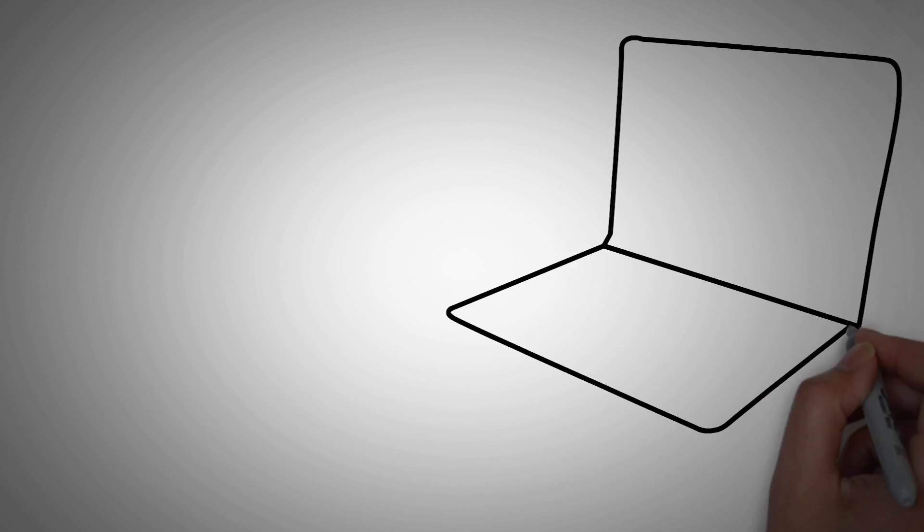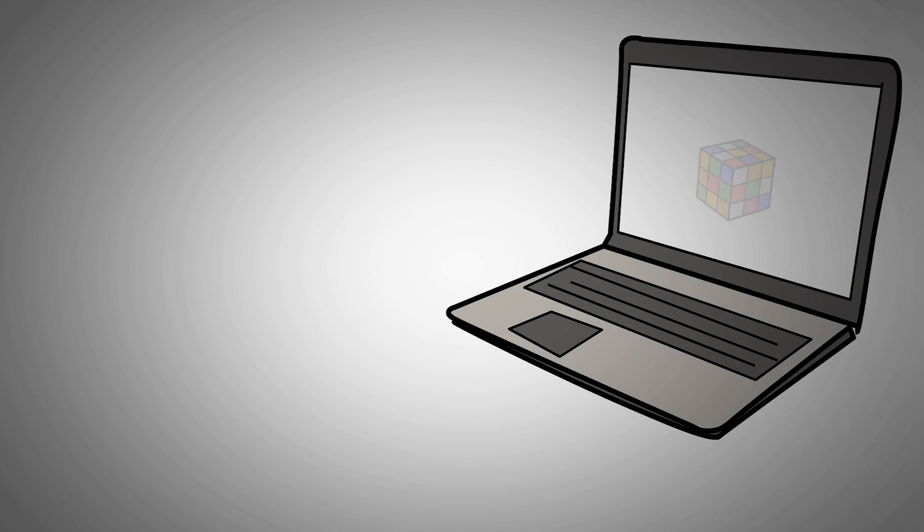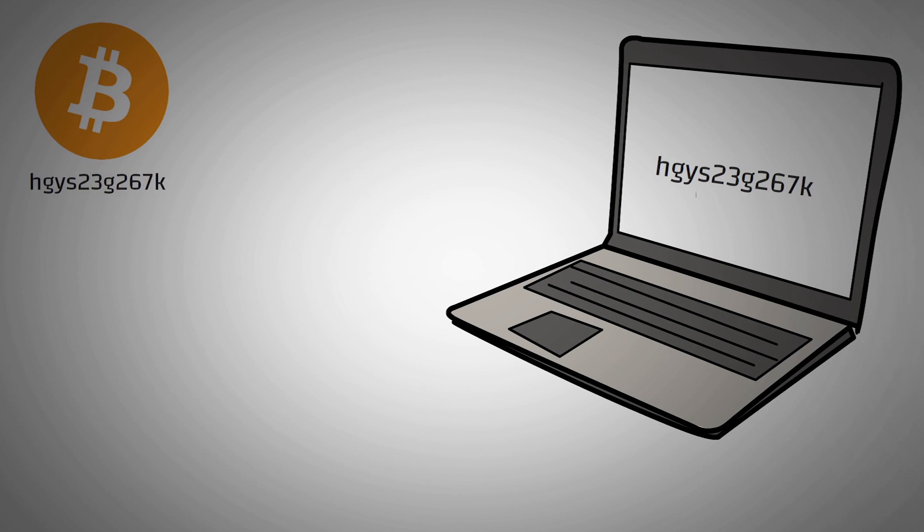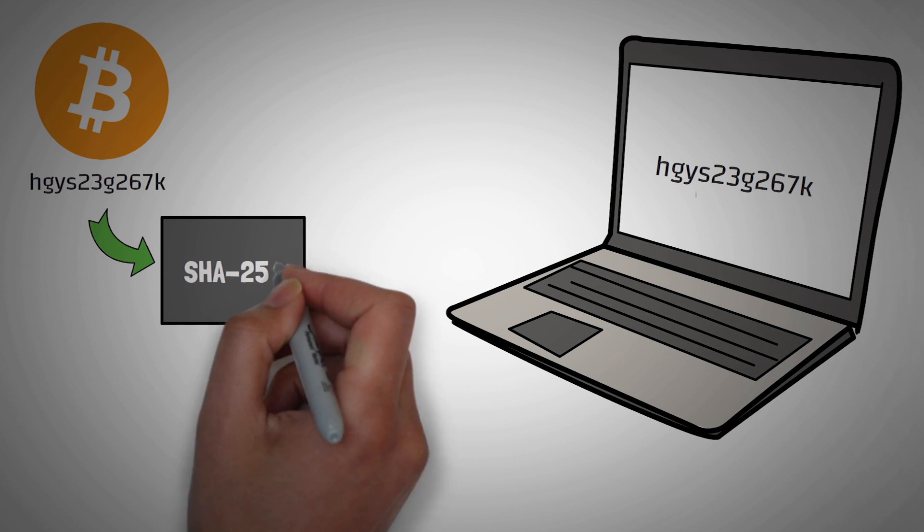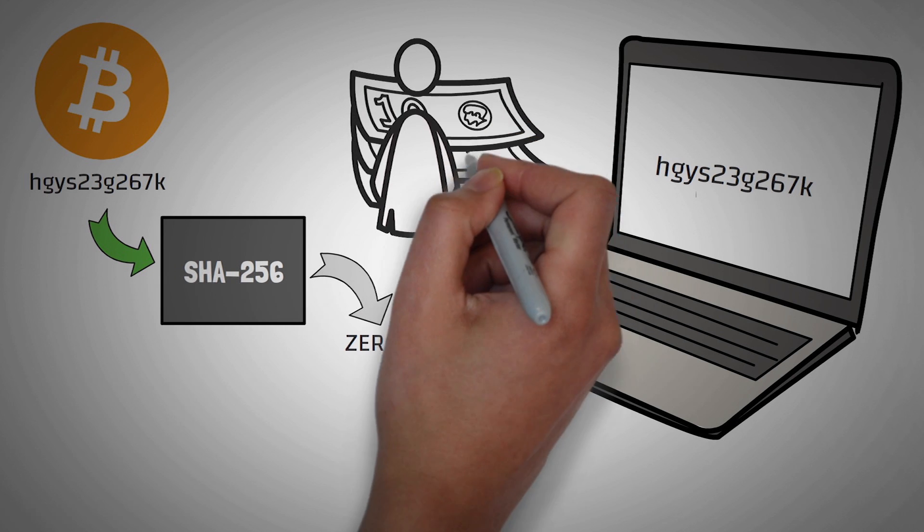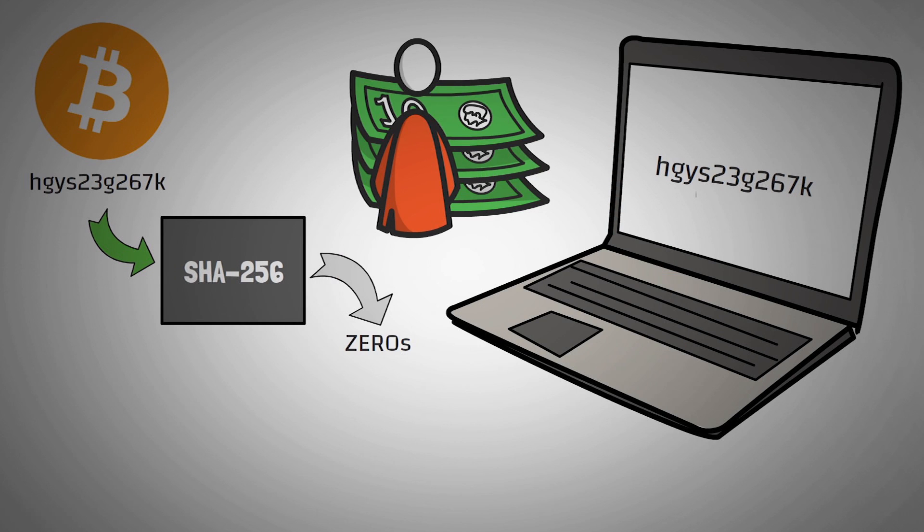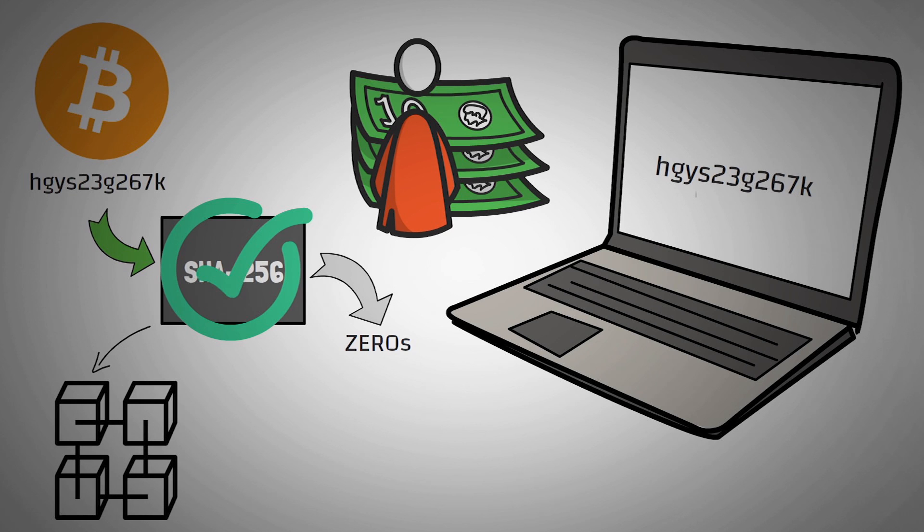So proof of work is when a computer is incentivized to solve a complex puzzle by guessing and checking until they get the right numbers. In the case of Bitcoin, you're trying to find a random mix of numbers and letters that you can put into a magical black box so that it outputs a certain number of zeros. And if you get the right number of zeros, you win the lottery. And we say that you have solved that block and that it will get added to the total blockchain.